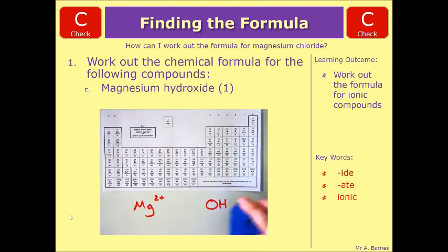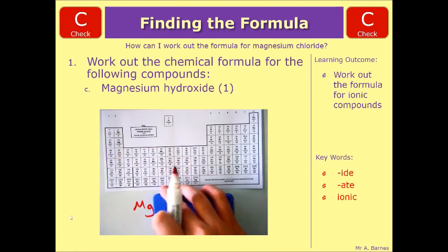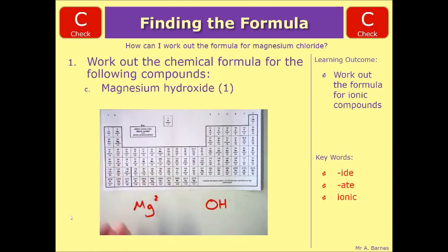Now, this one's slightly more complicated. So you rub out the charge. You put the 2 down below. But the issue is, we've got a compound ion. So we need to put brackets in.